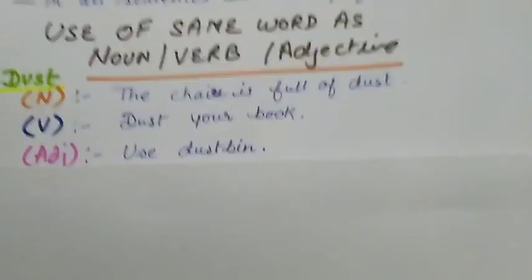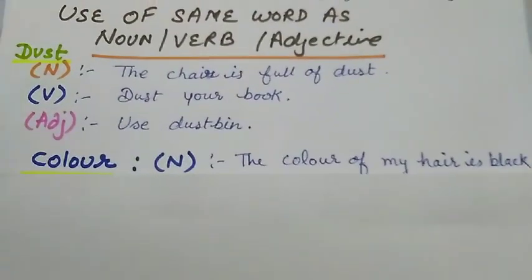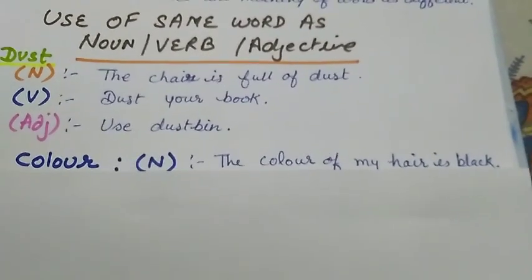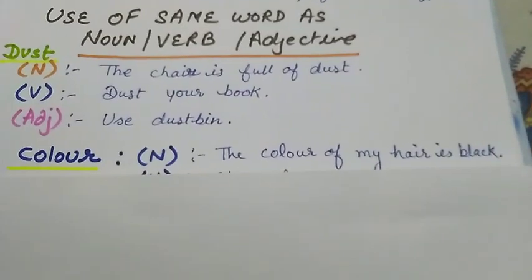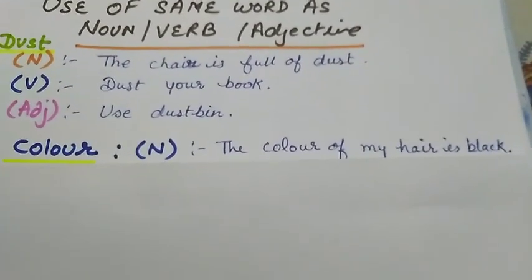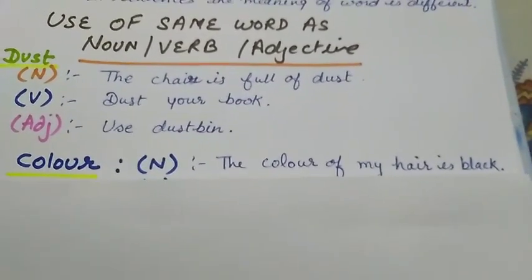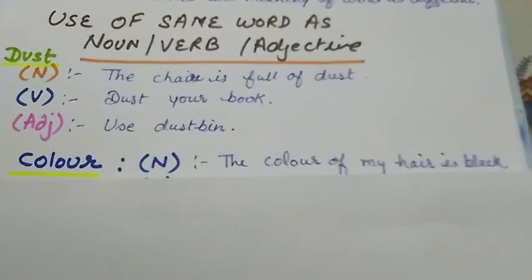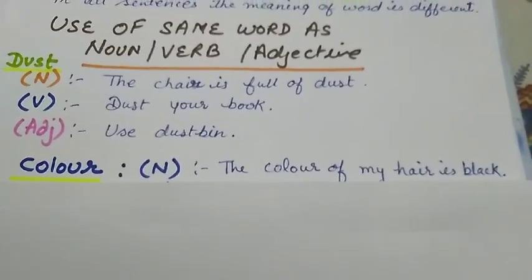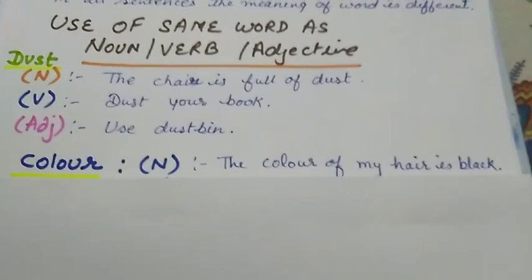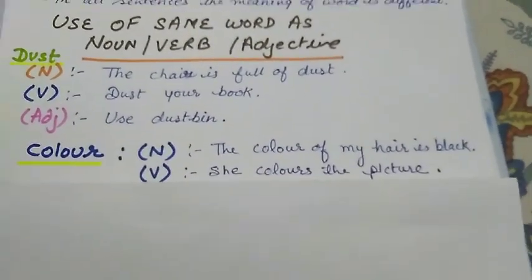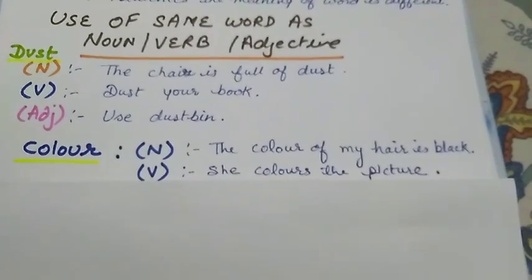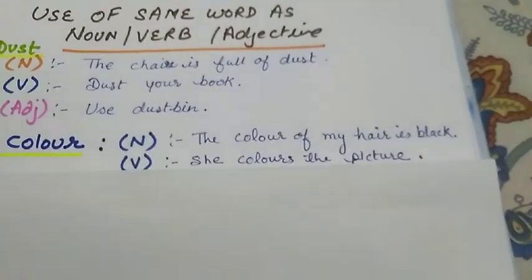Now see the next word. The word is 'color.' As a noun: The color of my hair is black. You can make sentences like this where we use the word color as a noun. As a verb: She colors the picture.